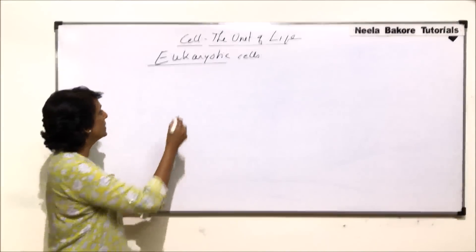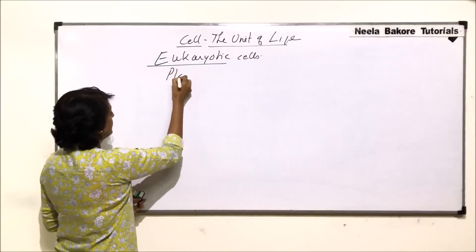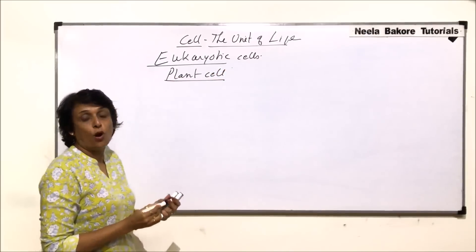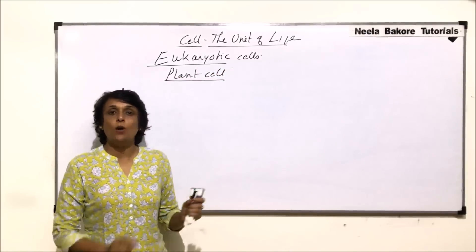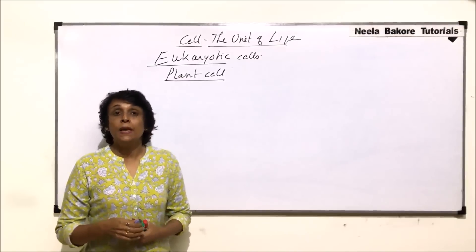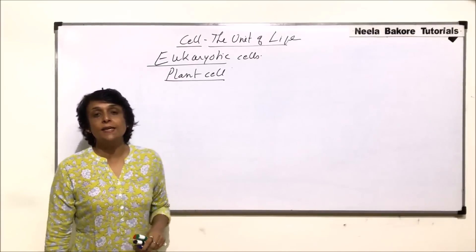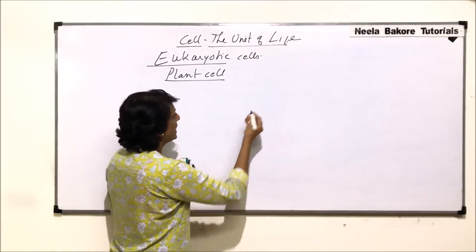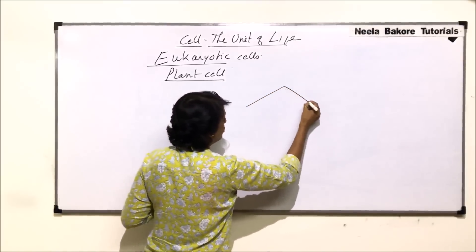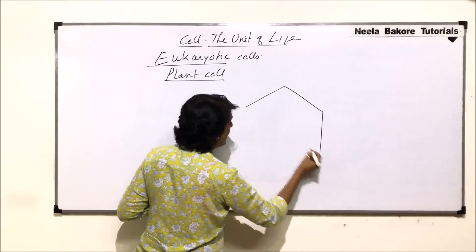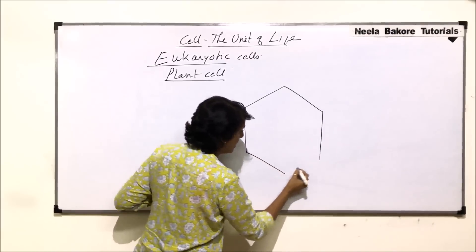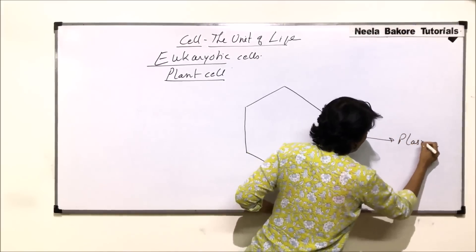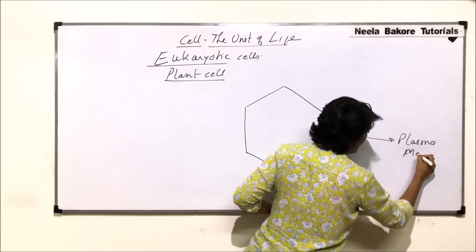The next eukaryotic cell we will take up is the plant cell. After seeing the structure of the animal cell, we will now understand how the plant cell is different from it. In plant cells, the shape is normally hexagonal or polygonal. Let us make one hexagonal cell — the outer line or membrane we are drawing is the plasma membrane, same as in the animal cell.